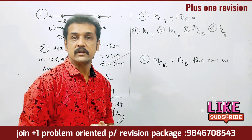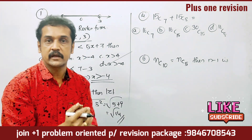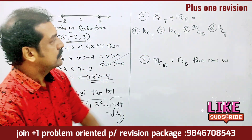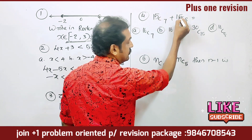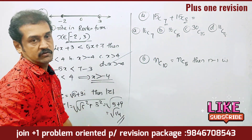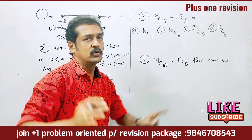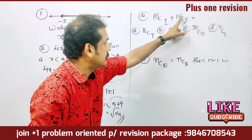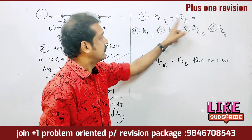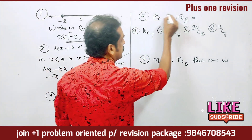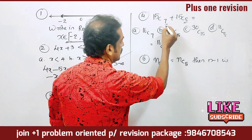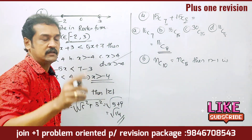Next problem: 15C7 + 15C8. These two terms have the same number. Using the identity nCr + nC(r+1) = (n+1)C(r+1), the answer is 16C8. That is the shortcut: these two basically combine to give one number, and the answer is 16C8.